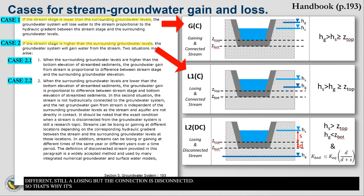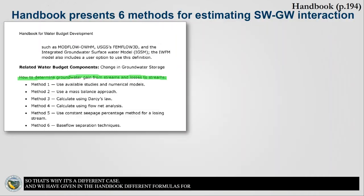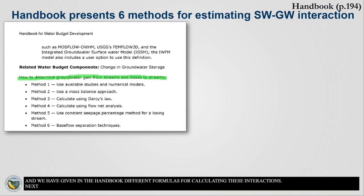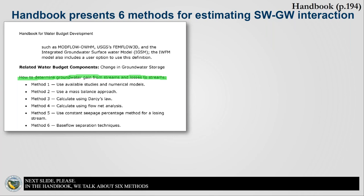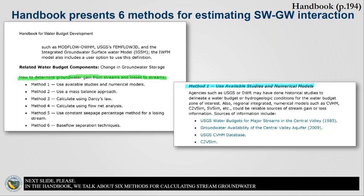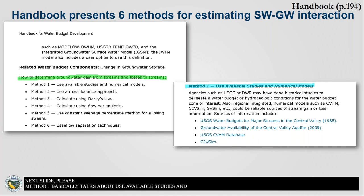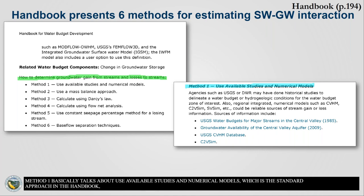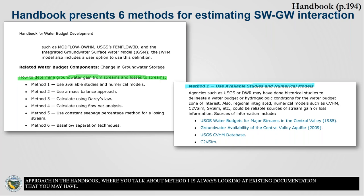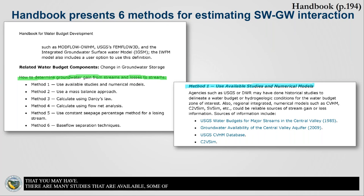We have given you different formulas in the handbook for calculating this interaction. In the handbook, we talk about six methods for calculating stream-groundwater interaction. Method one talks about using available studies and numerical models — always the first approach: look at existing documentation. There are many studies available, some of which are listed for you so you can find information about stream-groundwater interaction.